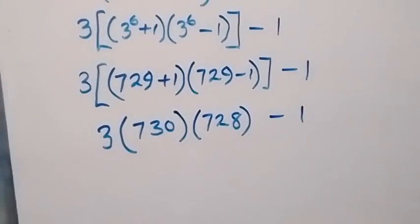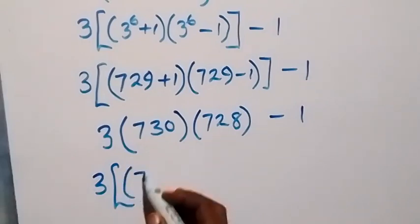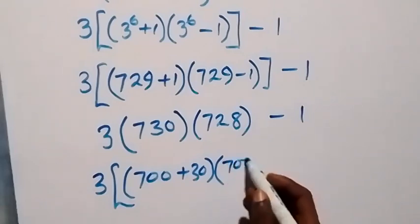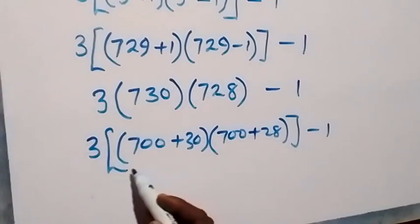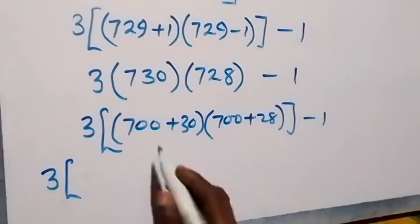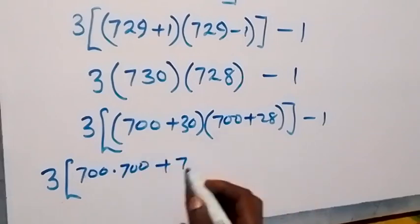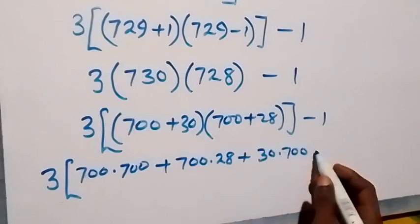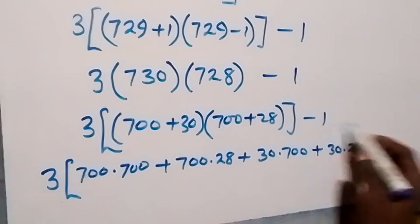We can write this in another way. As 3 into brackets, here we factor 730 as 700 plus 30, and 728 as 700 plus 28, then minus 1. For easy expansion we multiply: 700 times 700 gives 490,000, plus 700 times 28 gives 19,600, plus 30 times 700 gives 21,000, plus 30 times 28 gives 840, then minus 1.